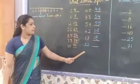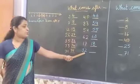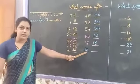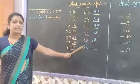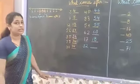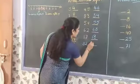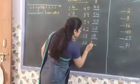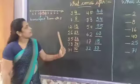And next number is 32. What is this? 32. What comes after 32? 3, 3 — that is 33.